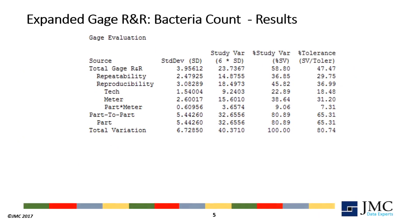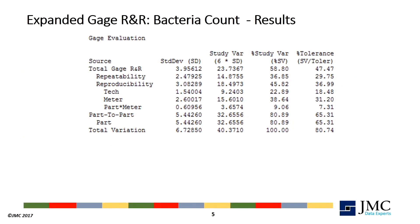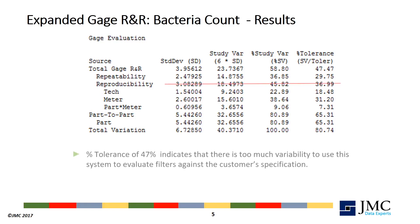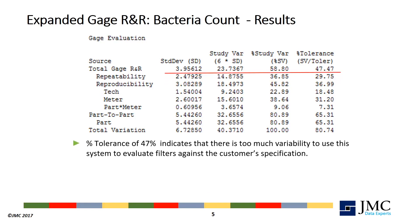A summary of the study results can be seen in the percent contribution table. The percent tolerance calculation of 47% indicates that there is too much measurement variation to use this measurement to compare it to the customer specification.